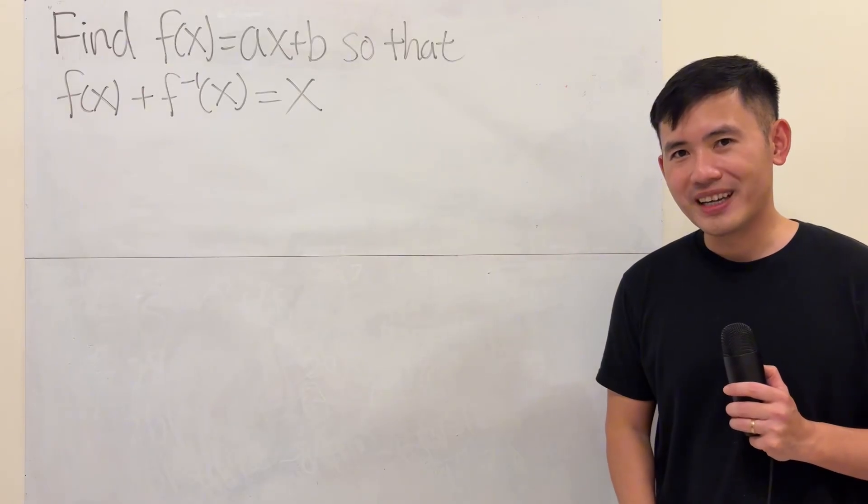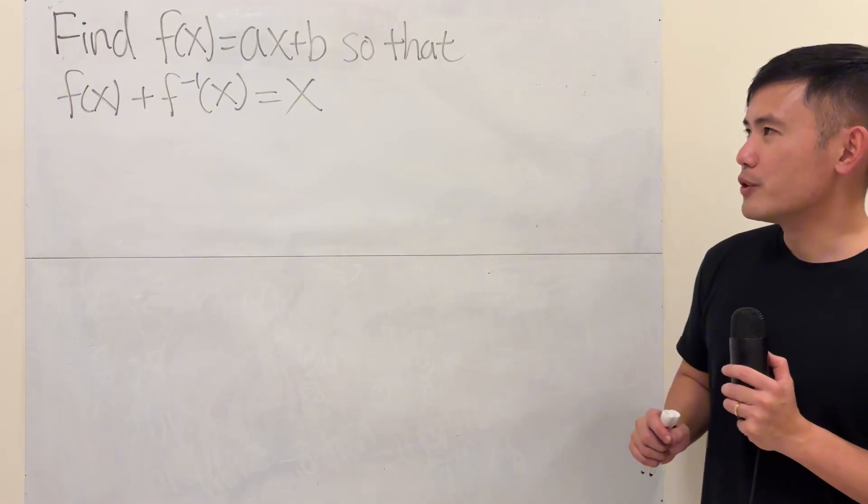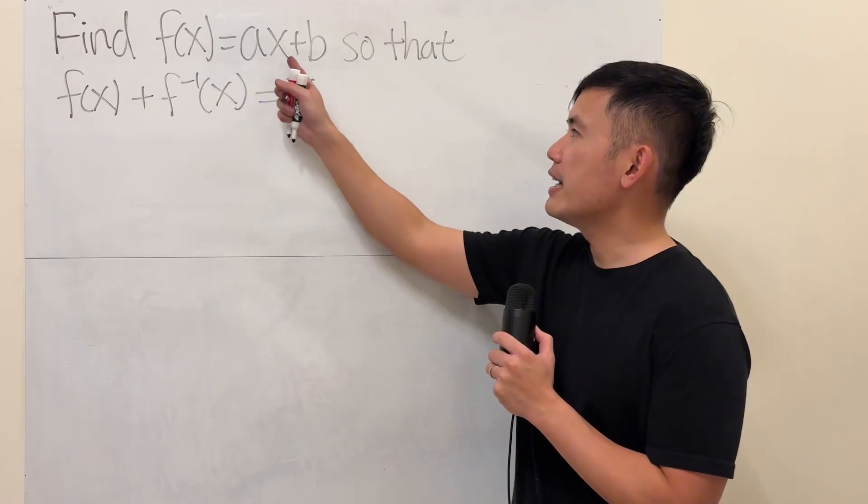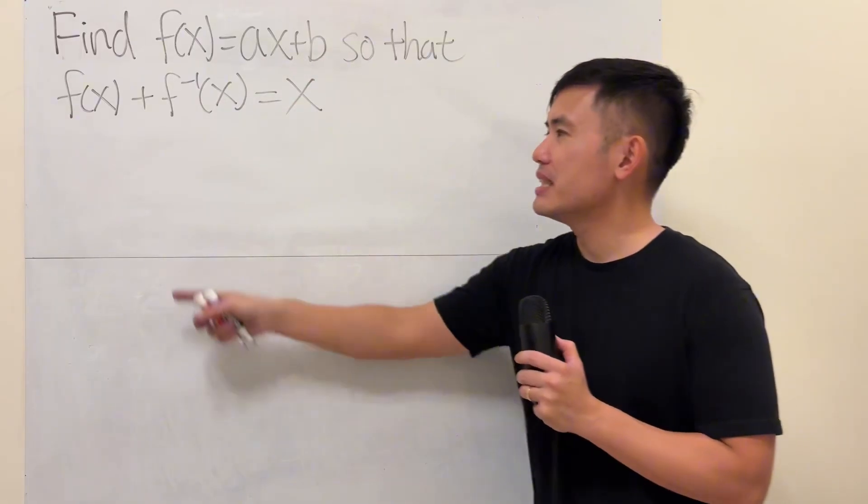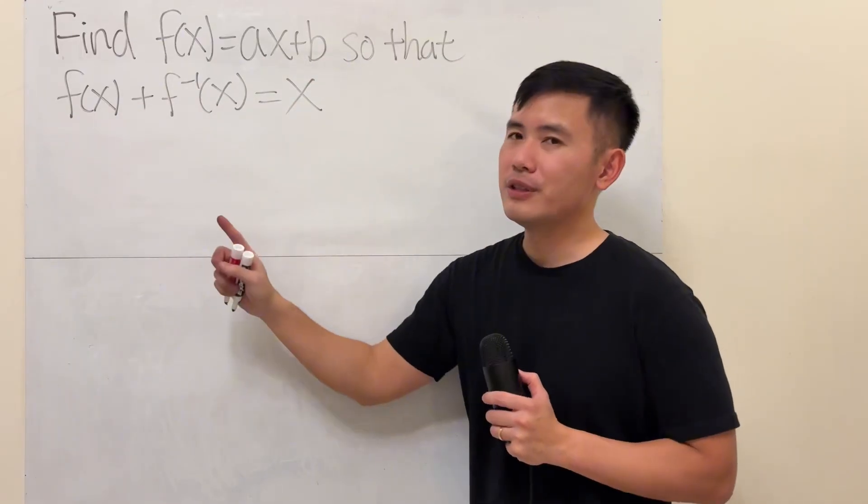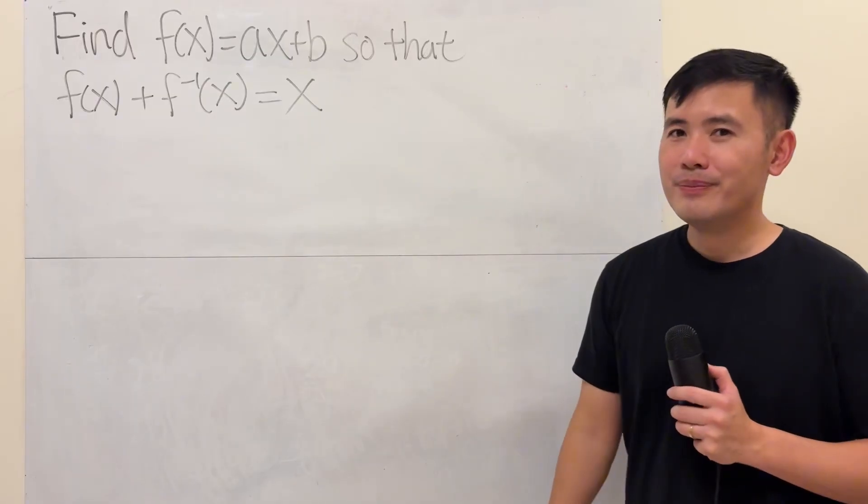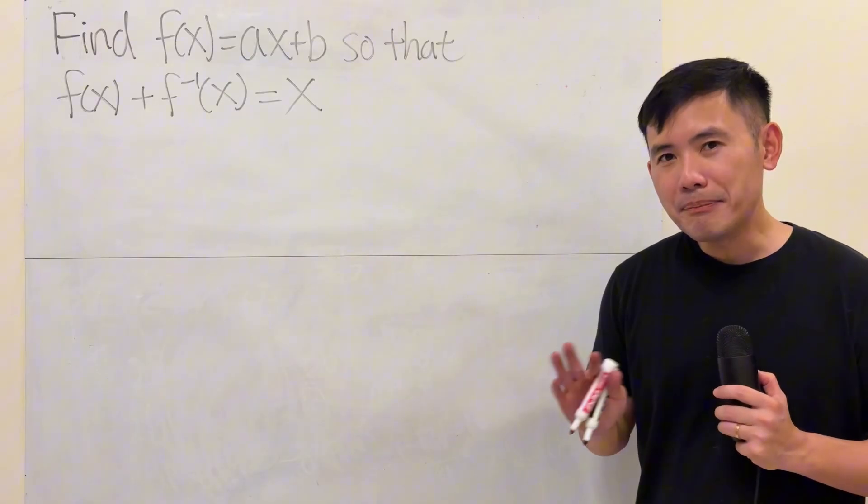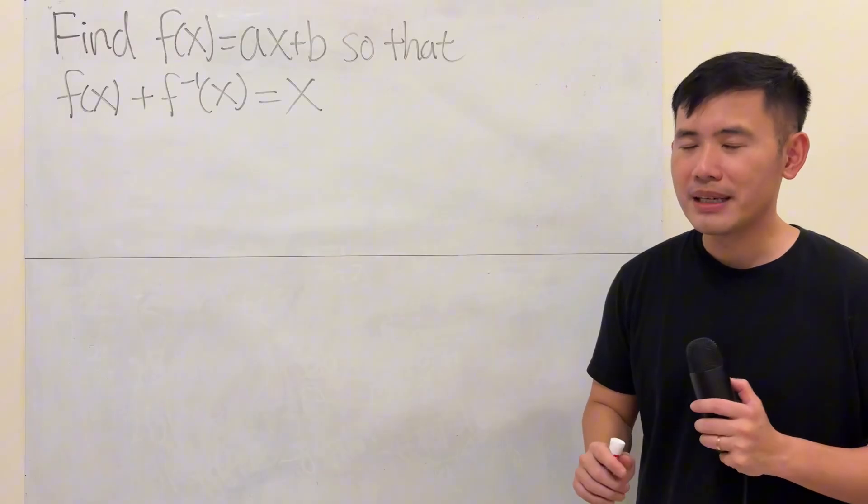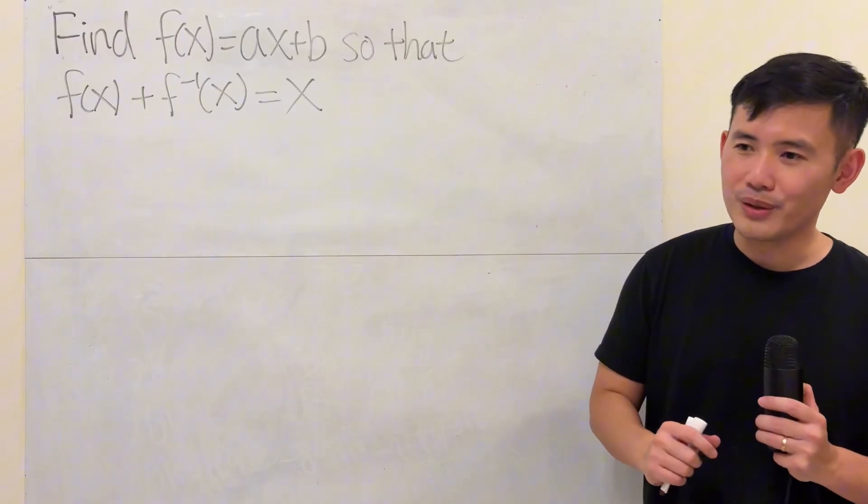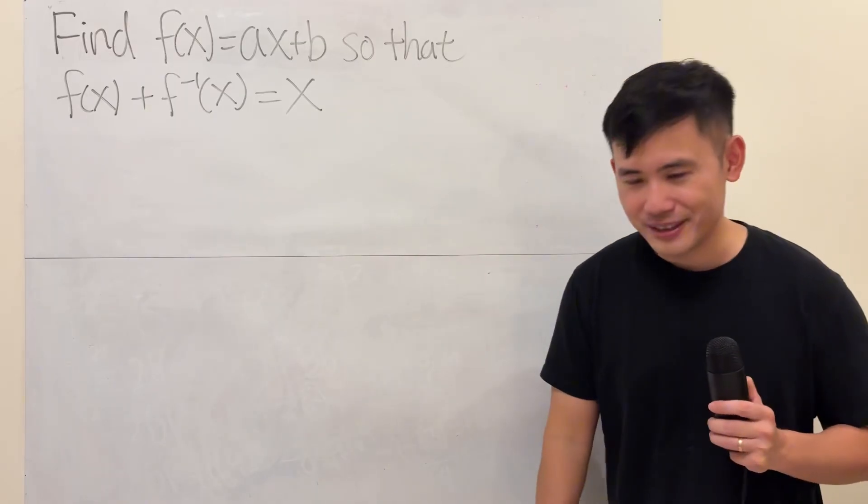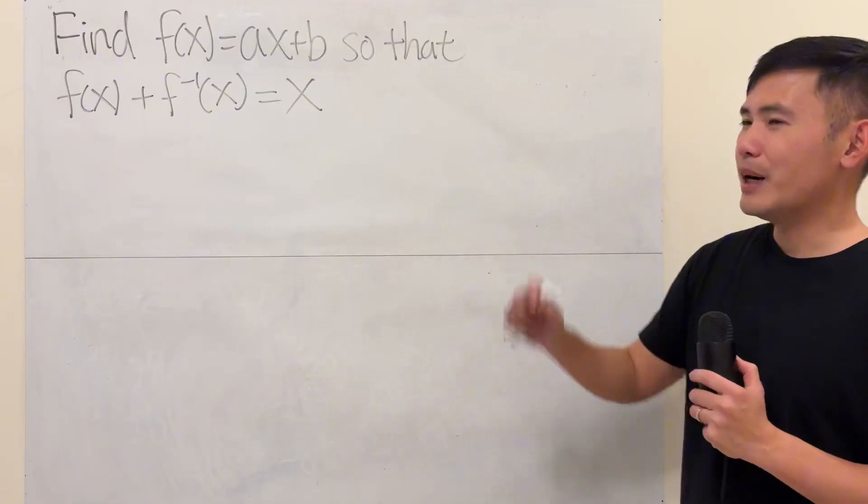Today, I have a very fun question for you guys. Is it possible for us to find a function in the form of ax plus b so that the function plus its inverse is equal to x? Well, I will tell you, it's not possible in the real world, but it's possible in the complex world. You have to use complex numbers. Let's see how we can solve it.